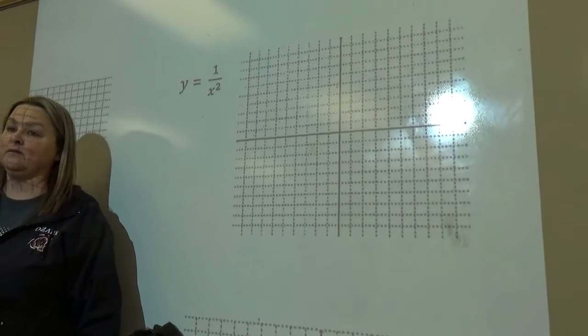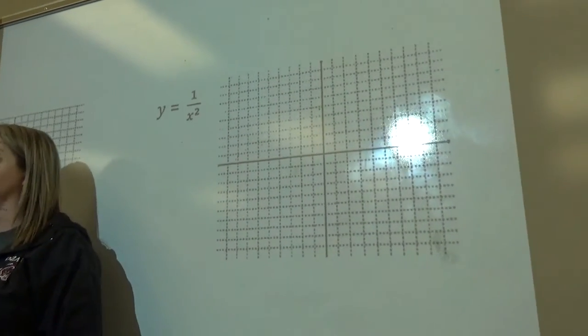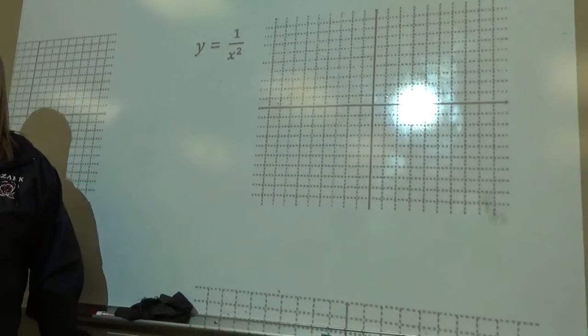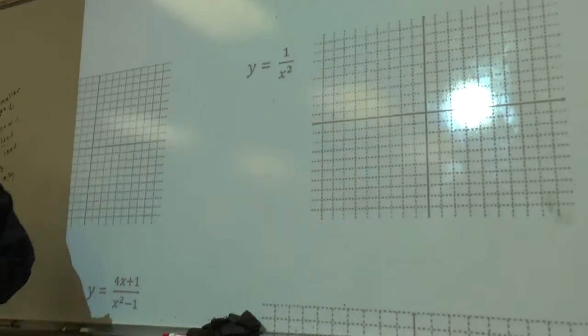I want to think about the x-intercept, vertical asymptotes, and horizontal asymptotes. Vertical asymptote, how do you find the vertical asymptote?